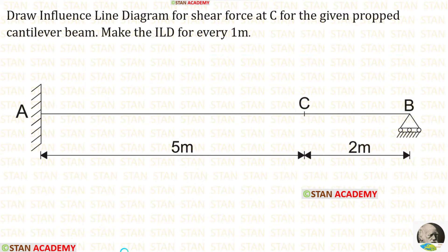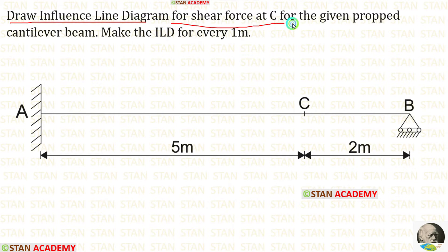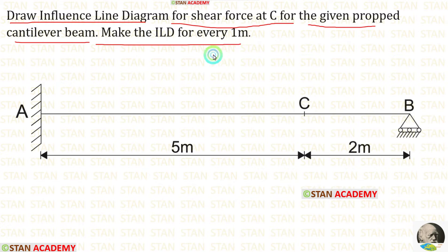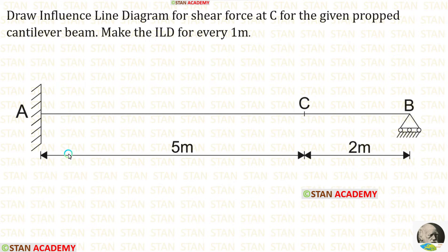Today we are going to do a problem based on influence line diagram. Let us read the question one time. Draw influence line diagram for shear force at C for the given propped cantilever beam. Make the ILD for every 1 meter. A propped cantilever of length 7 meters is given.